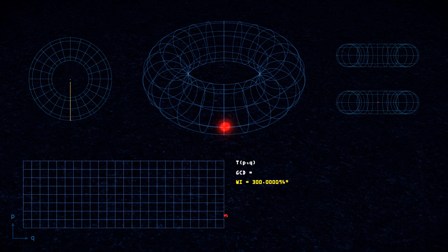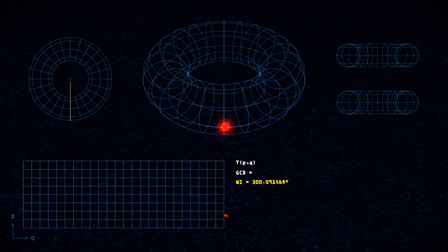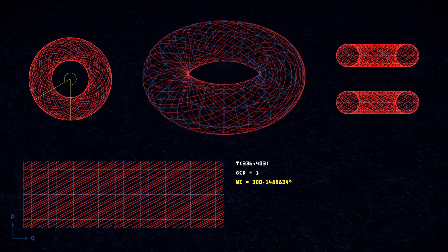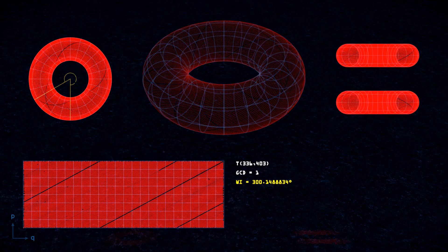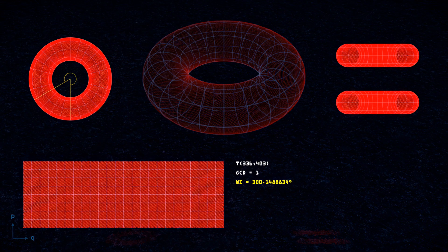When we slowly raise the winding interval, we can see that for many values we do not get a torus knot. This is because the interval must be able to multiply to a multiple of 360 to form a closed loop. One of the next suitable winding intervals is 300.148834 degrees, which generates a knot with a configuration of 336-403. Again, we can see that the GCD is 1, which confirms that this torus knot is one closed singular loop.